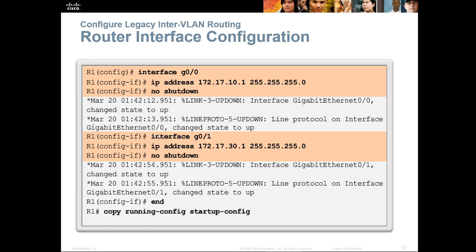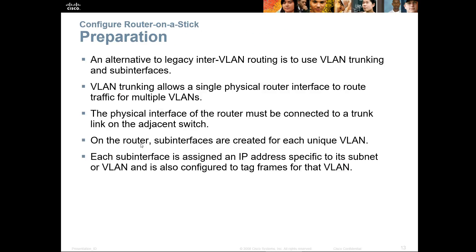On the router, you would assign an IP address to each of those physical interfaces — one IP address for VLAN 10, another for VLAN 30. This was a really bad way of doing it, but it was one way.